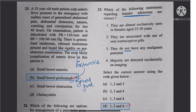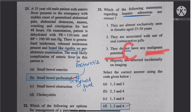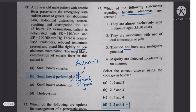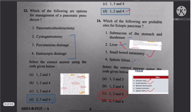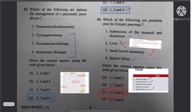Question 23: Statements about hepatic adenoma — it occurs in the 25 to 50 age group, is associated with OCP use, is incidentally detected, and has malignant potential. These don't become wrong, so the answer is 1, 2, and 4.